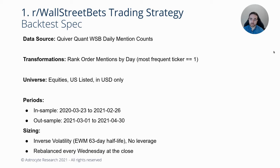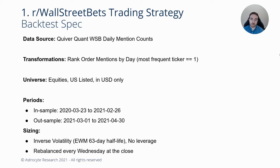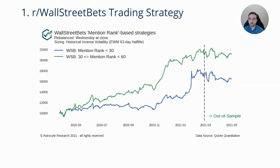When we look at the strategy, what we're going to do is rebalance every Wednesday and size the portfolio using inverse volatility ranking, calculated using an exponentially weighted moving average. We're going to take Tuesday night's counts and implement it on Wednesday's close.